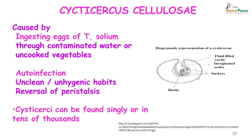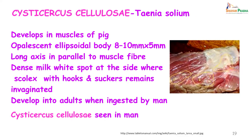Cysticercus cellulosae develops because of ingestion of eggs of Taenia solium through contaminated water or uncooked vegetables. Auto-infection can occur due to unhygienic habits and also sometimes because of reversal of peristalsis. Cysticercus in the human body can be found singly or in tens of thousands. In the muscle of the pig they appear as opalescent ellipsoidal bodies, 8 to 10 by 5 millimeters, with dense milk-white spots where the scolex, hooks and suckers are invaginated. They develop into adults when ingested by man and have a similar appearance when causing cysticercus cellulosae in man.